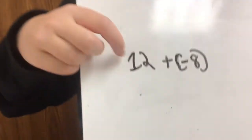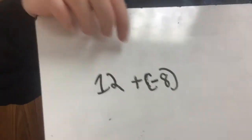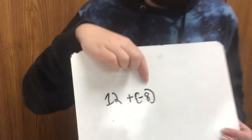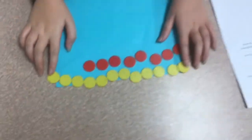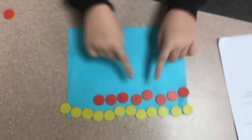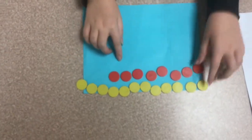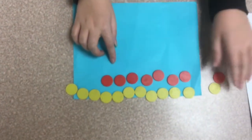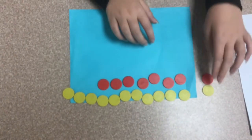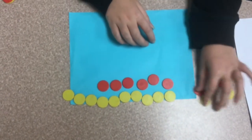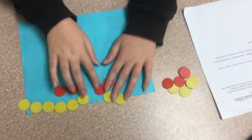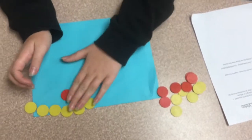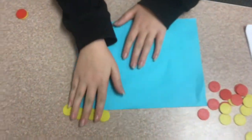Today we are going to be doing positive 12 plus negative 8. Now let's do this with the chips. Positive 12 plus negative 8. Group them up so they're groups of 0s. And after you have done that, you get positive 4.